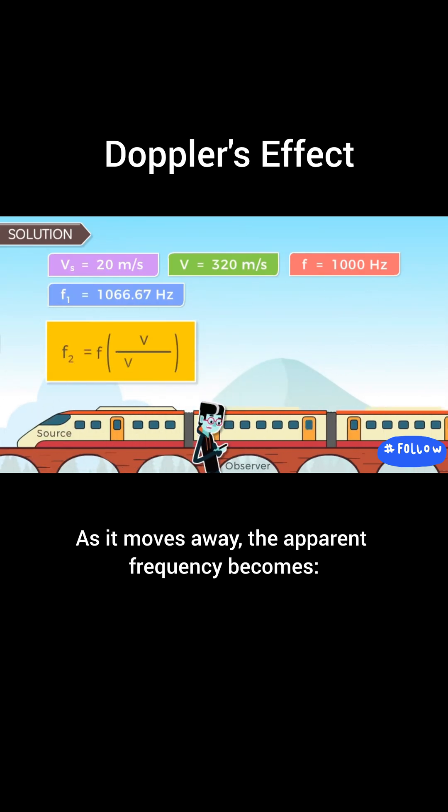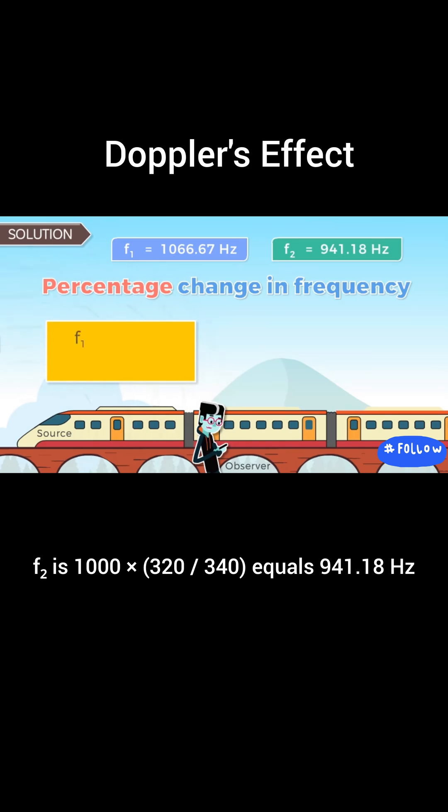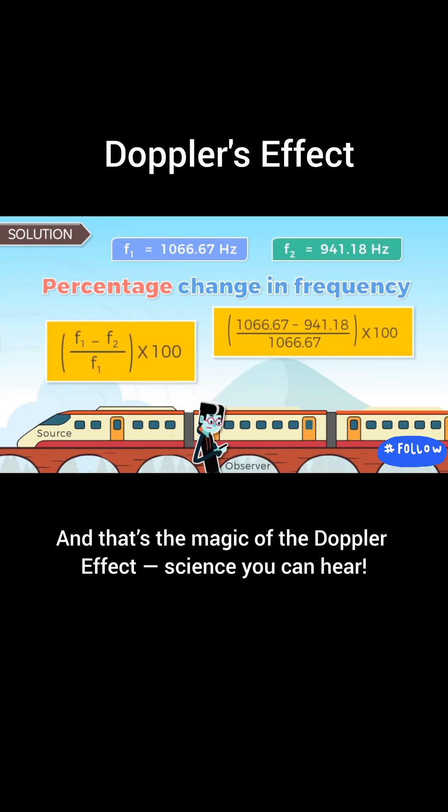As it moves away, the apparent frequency becomes f2, which is 1,000 times 320/340, equals 941.18 hertz. So the percentage change is about 12%. And that's the magic of the Doppler effect.